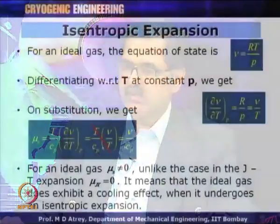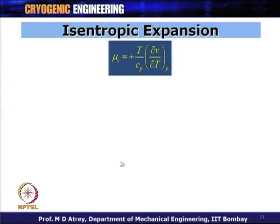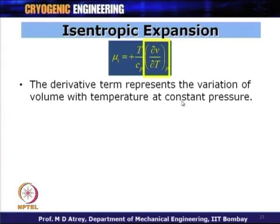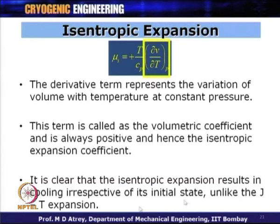For an ideal gas, mu_S is positive and non-zero. For a real gas using Van der Waals equation, with approximation for large specific volume, mu_S again reduces to V/C_P. Therefore, whether ideal gas or real gas, mu_S is always positive — meaning isentropic expansion always results in lowering of temperature.